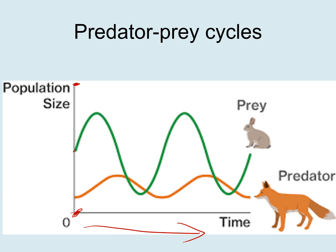As the rabbit population increases, the fox population slowly increases too, because there's more food available — more fox pups survive and grow up. When the fox population gets too high, they start eating more and more rabbits, so rabbit numbers go down. As rabbit numbers decrease, there is less food for foxes, so the fox population goes down too.